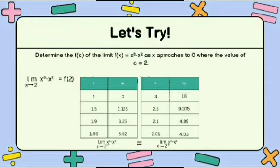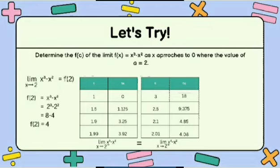First, we're going to substitute the given value of a in our X. So f of X is equal to X cubed minus X squared. Substituting, we will have 2 cubed minus 2 squared. Simplifying, we have 8 minus 4 is equal to 4. So the value of f of 2 is equal to positive 4.